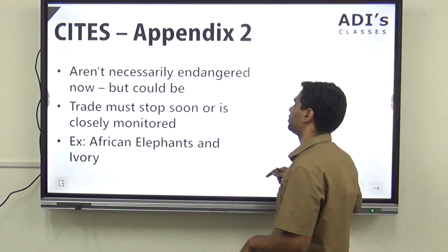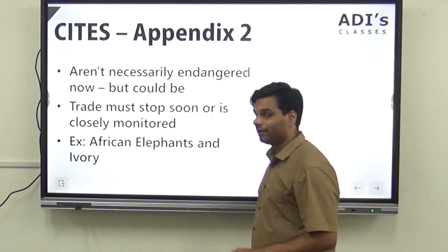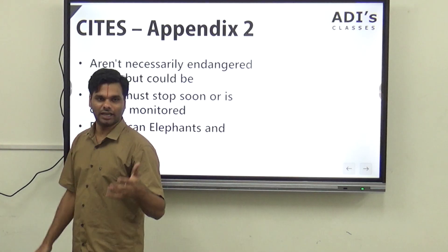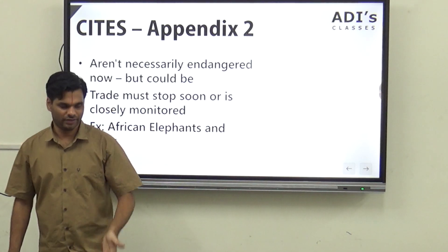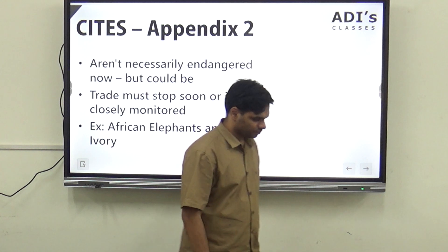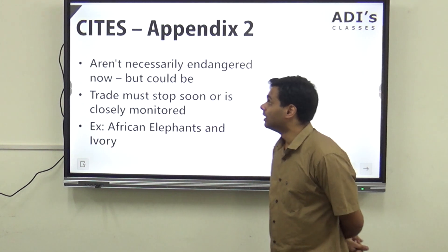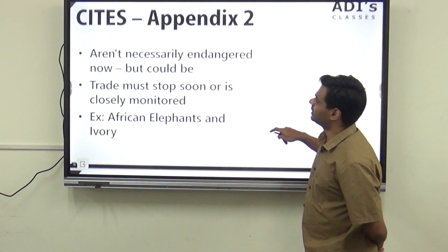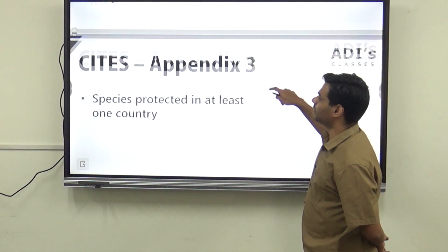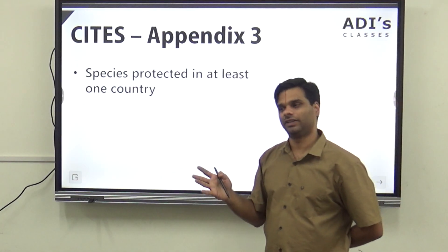An example is African elephants and ivory — the ivory trade was big. You would have seen Kenya and national geographic videos. Appendix two species are not necessarily endangered, but must be closely monitored. The example is African elephants.